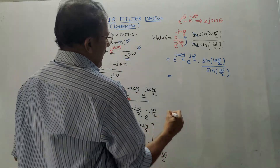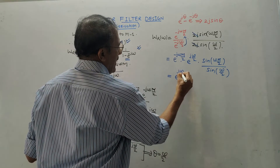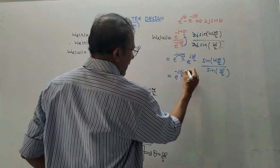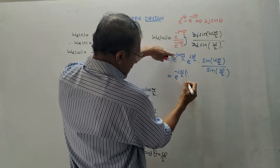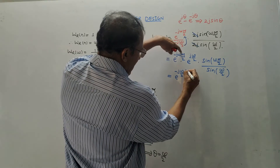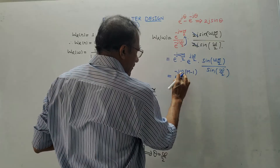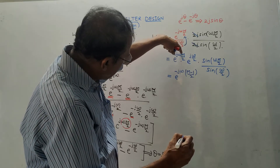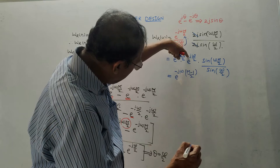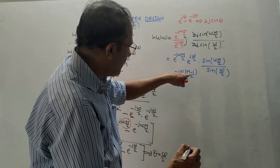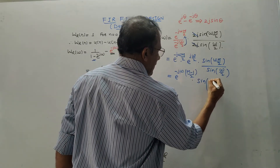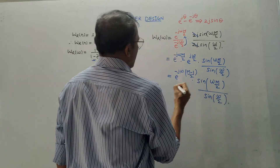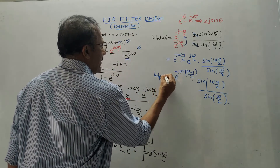In the last step, combining the exponential terms e^{-jωM/2} · e^{+jω/2} gives e^{-jω(M-1)/2}. The final derived expression for the rectangular window in the frequency domain is: WR(ω) = e^{-jω(M-1)/2} · sin(ωM/2) / sin(ω/2). This completes the derivation of the rectangular window function.